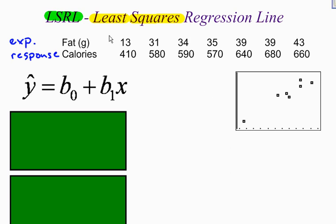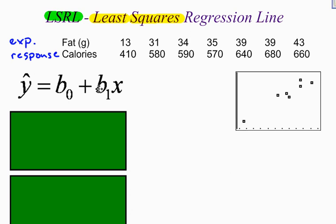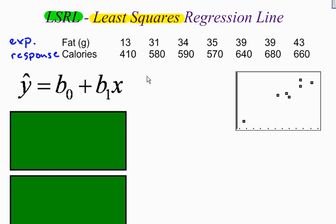How can we find the equation for this least squares regression line or line of best fit? The formula we're going to use looks like this: y-hat equals b sub 0 plus b sub 1 times x. It kind of looks like slope-intercept form from algebra — y equals mx plus b — but not exactly. The b sub 1 times x is like the mx, and b sub 0 is like the b, the y-intercept. In statistics it's slightly different: b sub 0 is still the y-intercept and b sub 1 is still the slope.